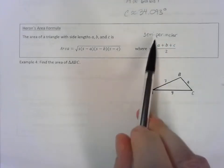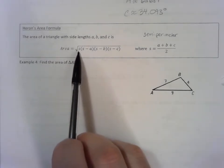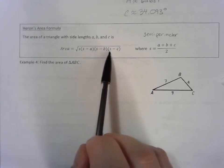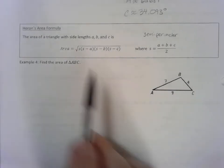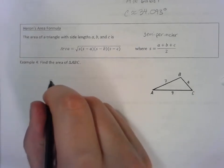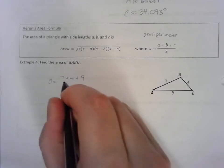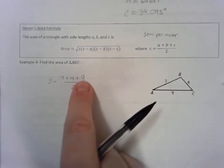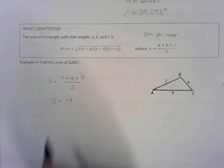To find the area, we just take the square root of that semi-perimeter times the semi-perimeter minus each of these side lengths a, b, and c. We want to find the area of triangle ABC. Let's first find the semi-perimeter: 7 plus 4 plus 9 divided by 2. So 7 and 4 is 11, plus 9 is 20, divided by 2. Our semi-perimeter is 10.